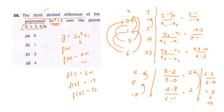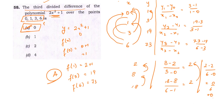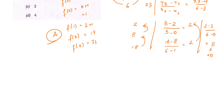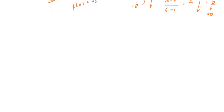The answer to question 58 is 0, which is option A. Option A is the correct answer. I will end this video here; you will find more solutions to ISS 2019 Statistics Paper 1 in our further videos.